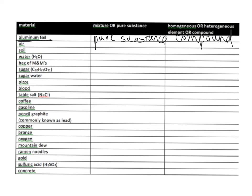Next one — air. Does air take up space and have mass? Yes, it does — it's matter. Can it be separated? Yes, it can — so that means it's a mixture. Is the air identical throughout? No, it's not — it's heterogeneous. Okay, complete this all the way through. Find a friend if you want to work with someone.